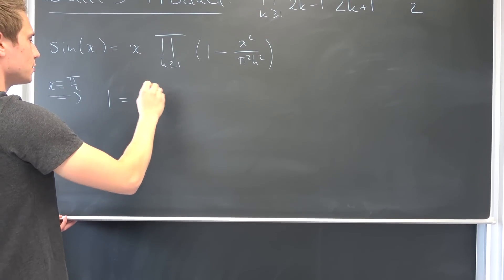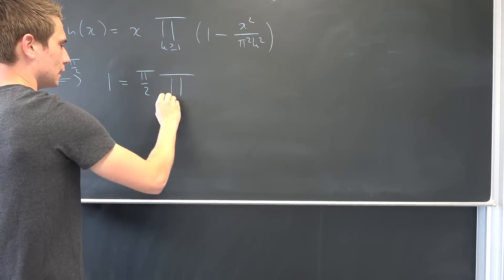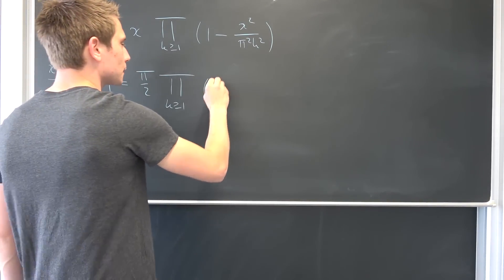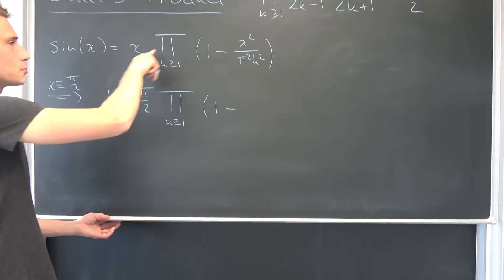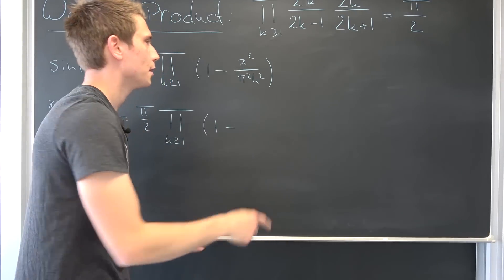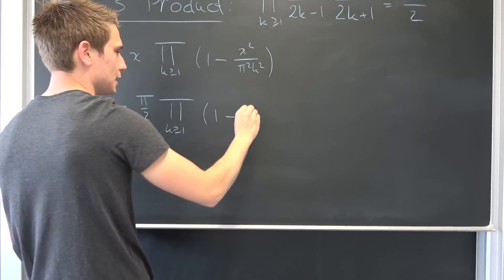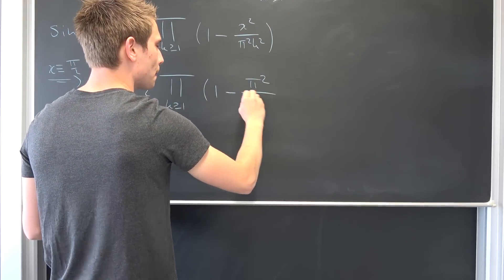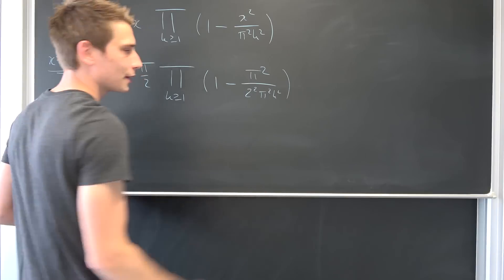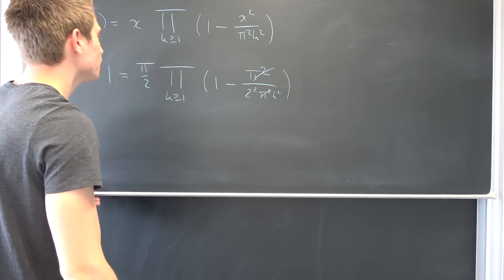This results in nothing but pi over 2 times the infinite product of 1 minus x squared, where x squared is pi squared over 2 squared, over pi squared k squared. This gives us pi squared over 2 squared times pi squared k squared. The cool thing is, the pi squared cancels out.